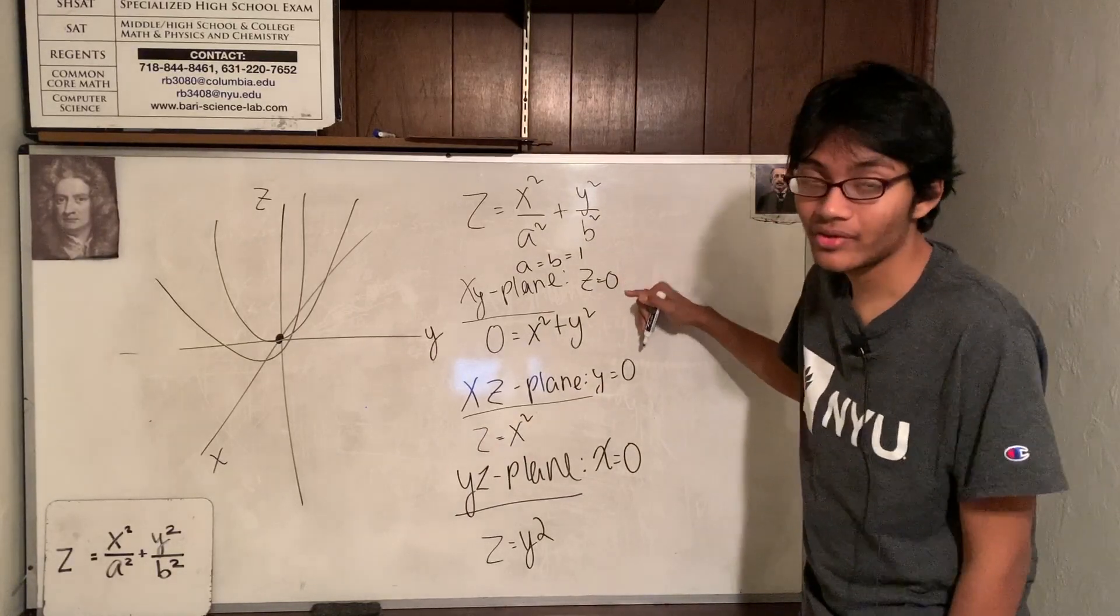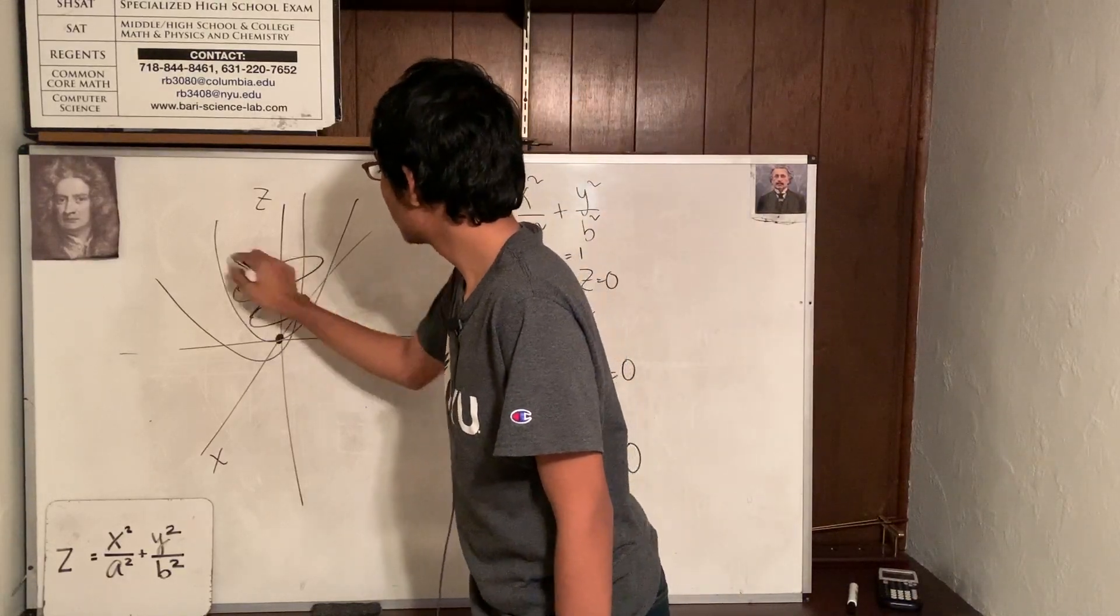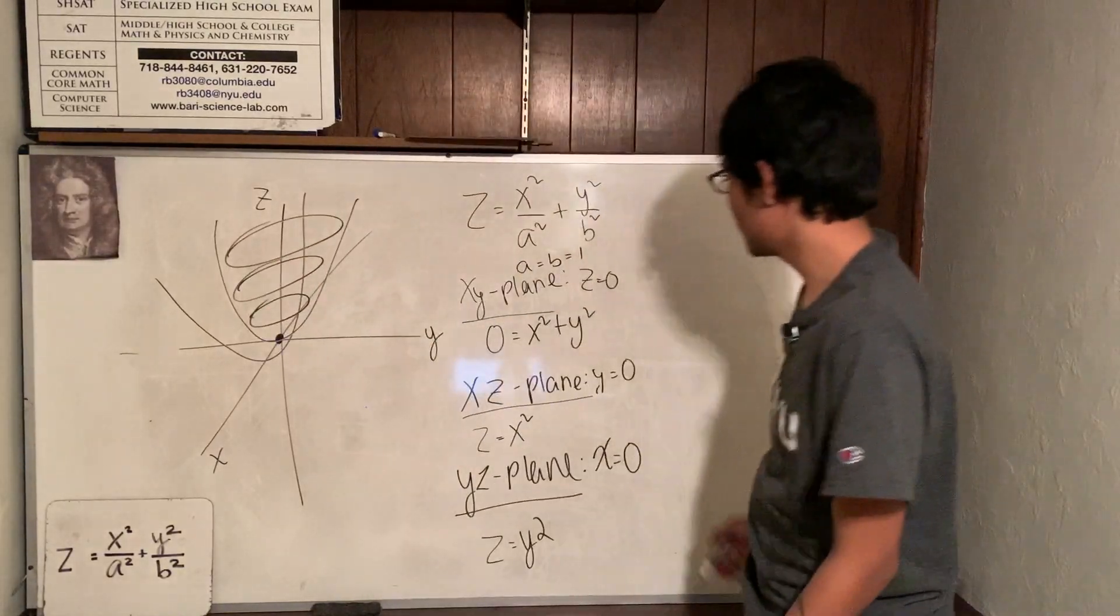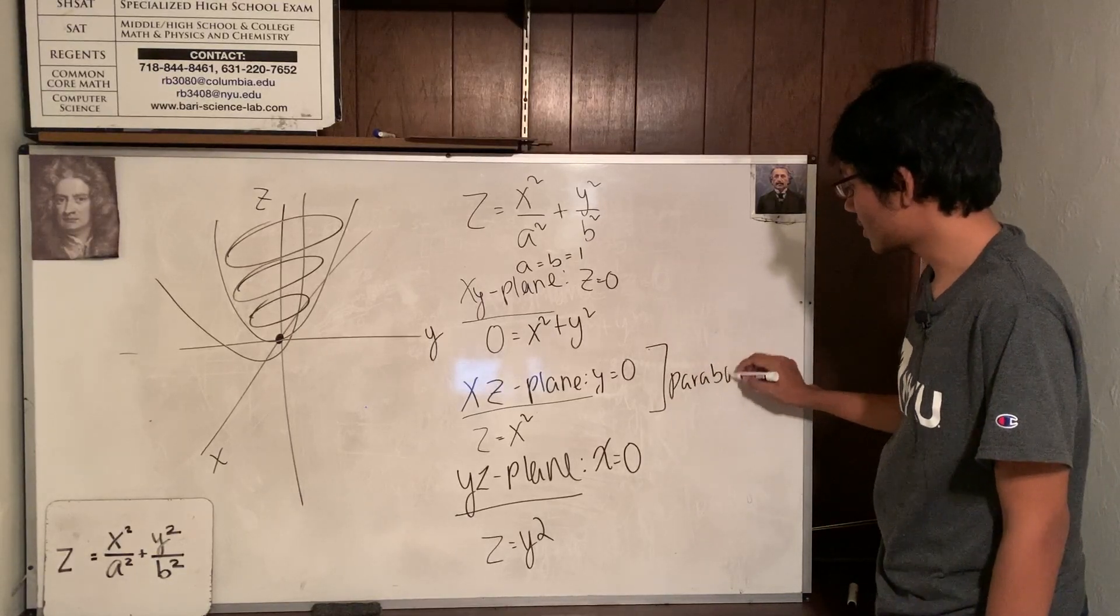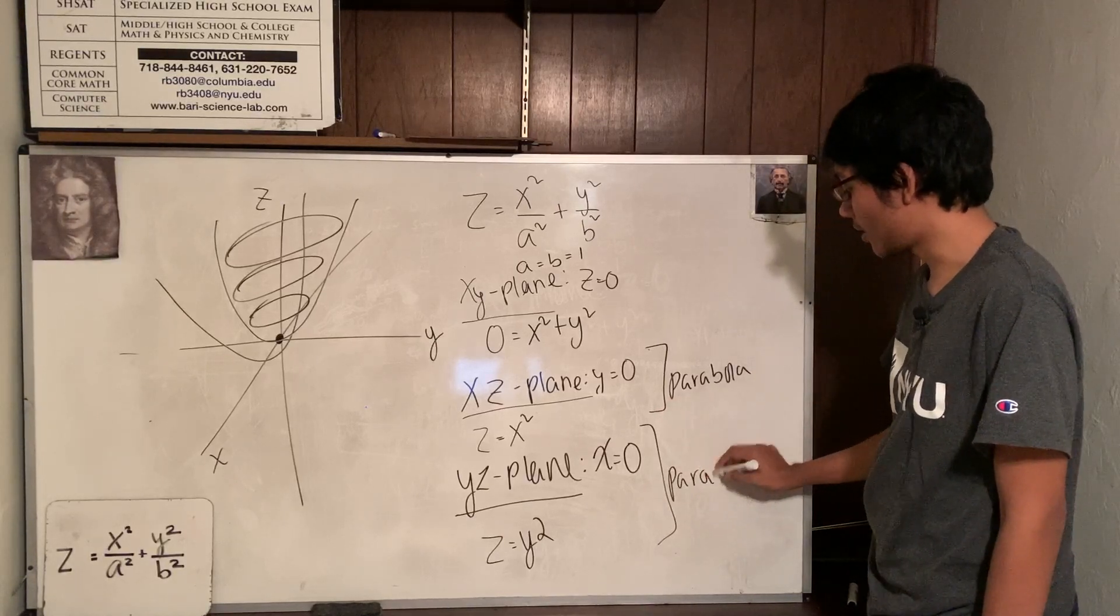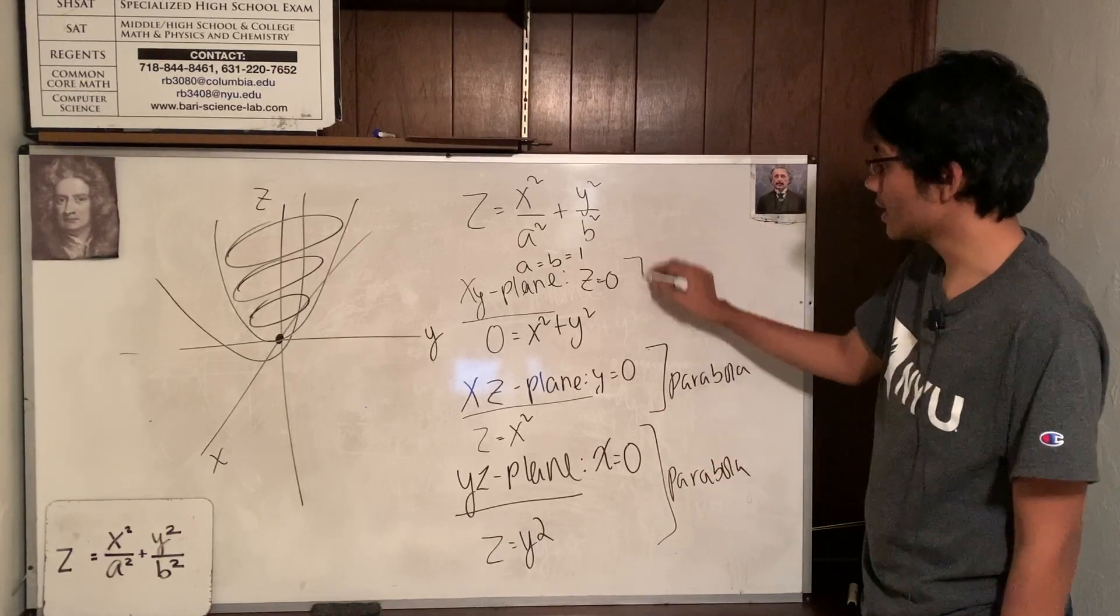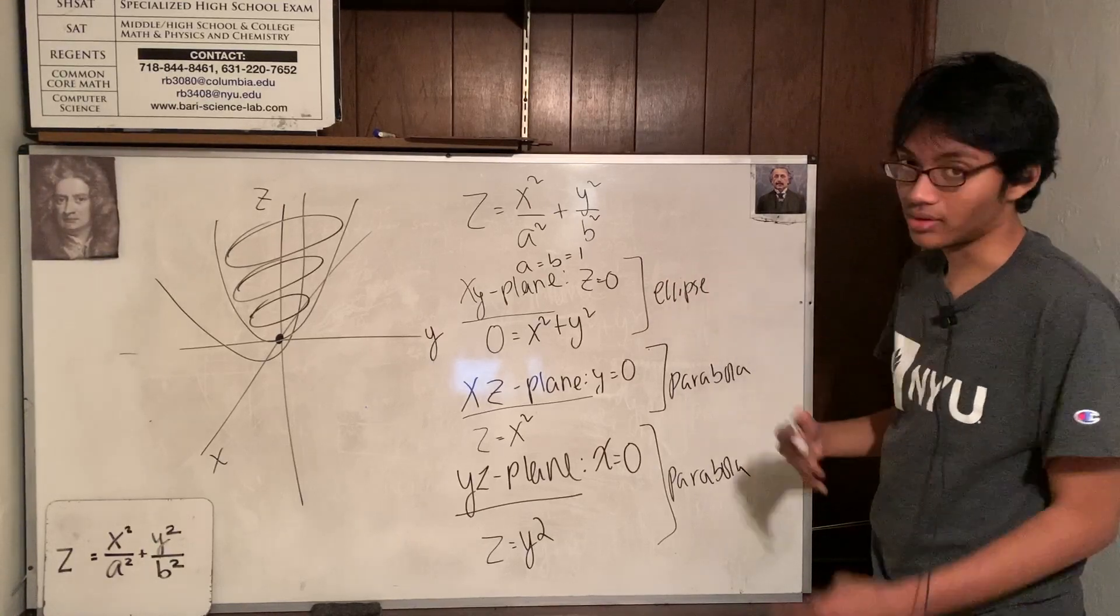If you think about this, if we vary this constant here, we'll end up with a bunch of circles throughout. So this is just—what is it? We got two parabolas. The cross section on the xz is a parabola. Cross section on the yz is a parabola. Cross section on the xy is a circle, or an ellipse if you want to be general.